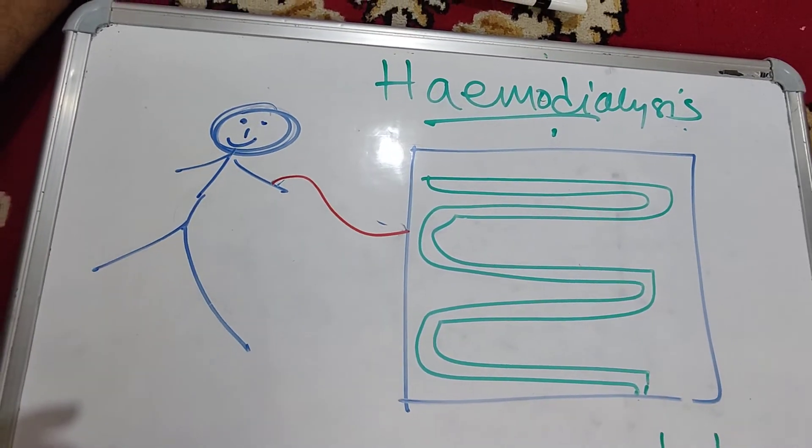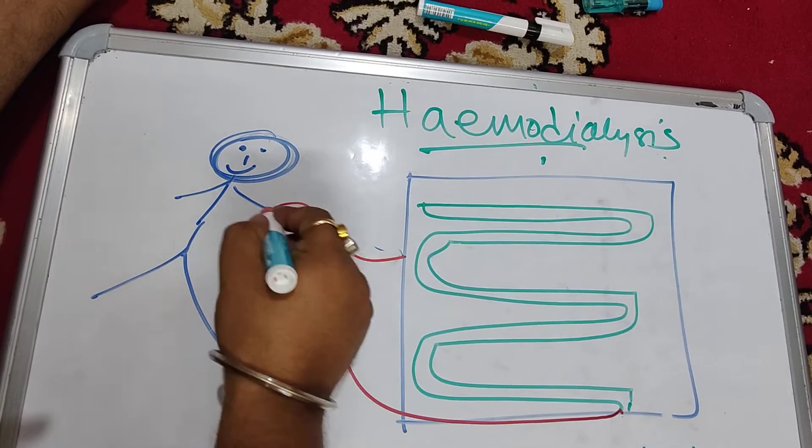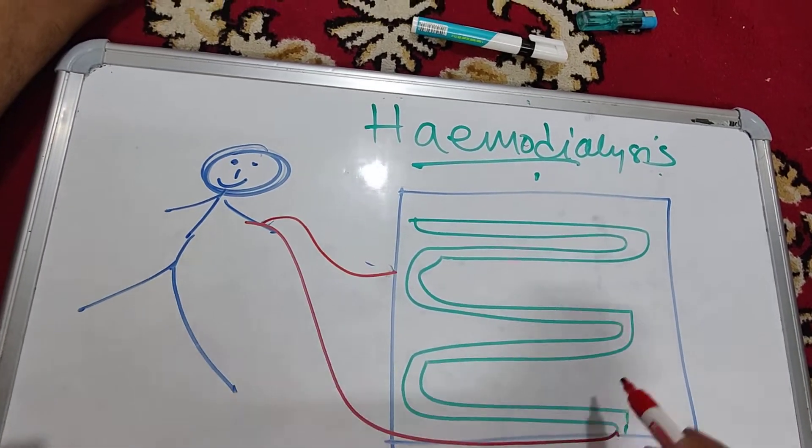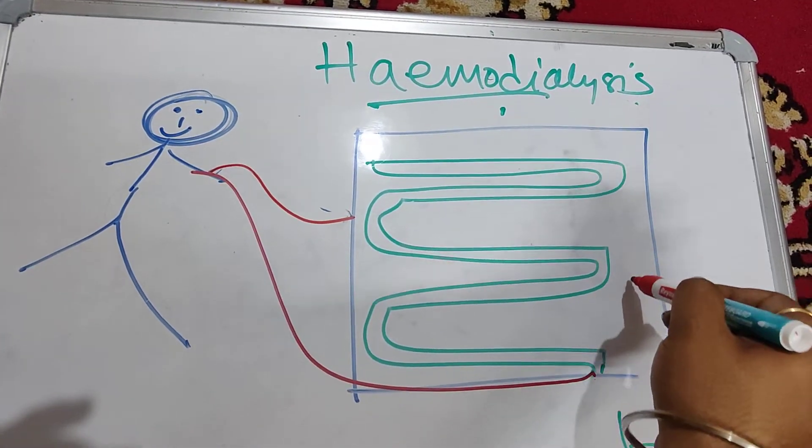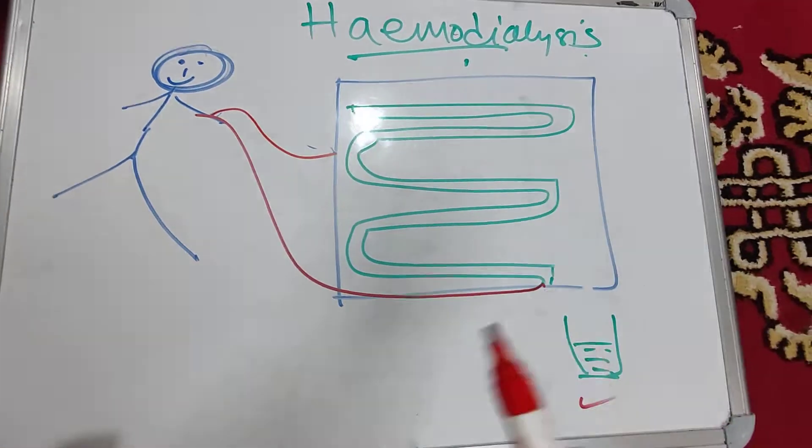The cleaned blood goes back to the person, and whatever waste products have mixed into the solution come out as urine. This is an artificial kidney outside the body.